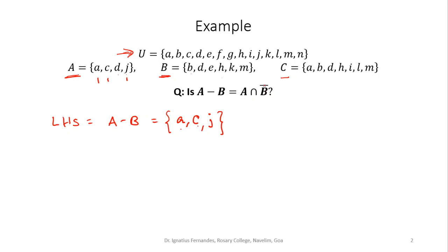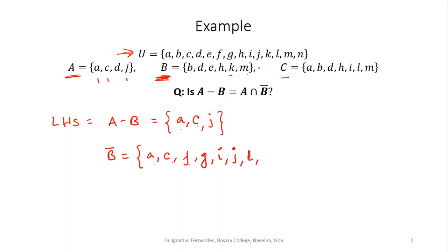Now let us look at the right hand side. First I will find out B complement — the elements of the universal set which are not in B. Going through U: A is not in B, C is not in B, F is not in B, G is not in B, I is not in B, J is not in B, L is not in B, N is not in B. So B complement = {A, C, F, G, I, J, L, N}.